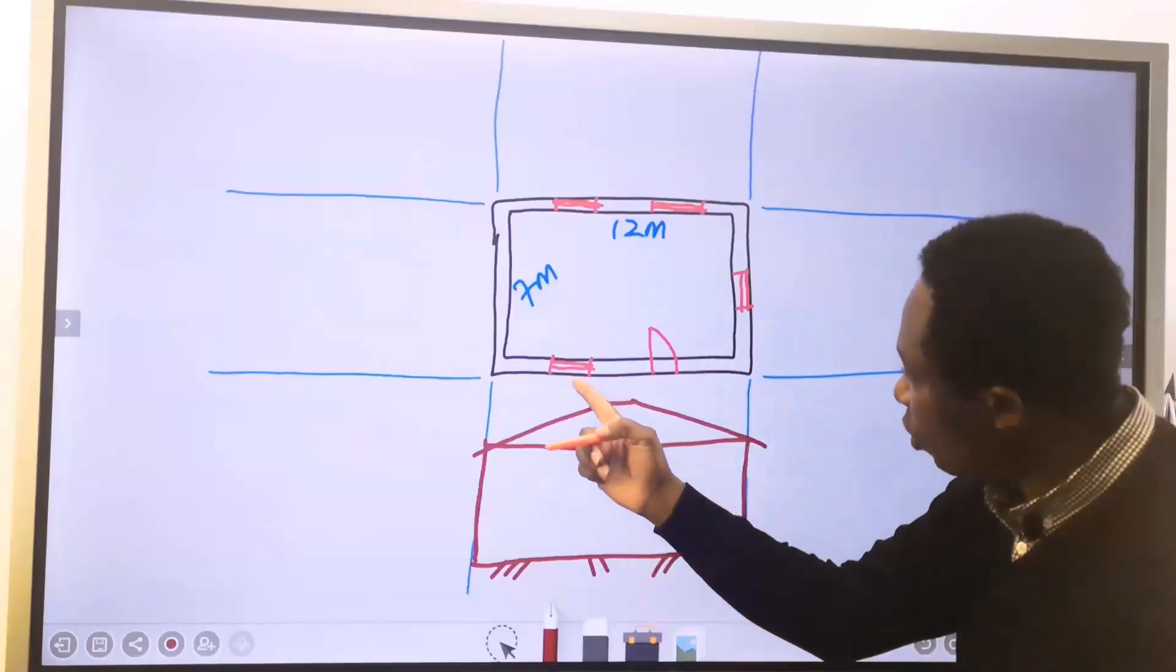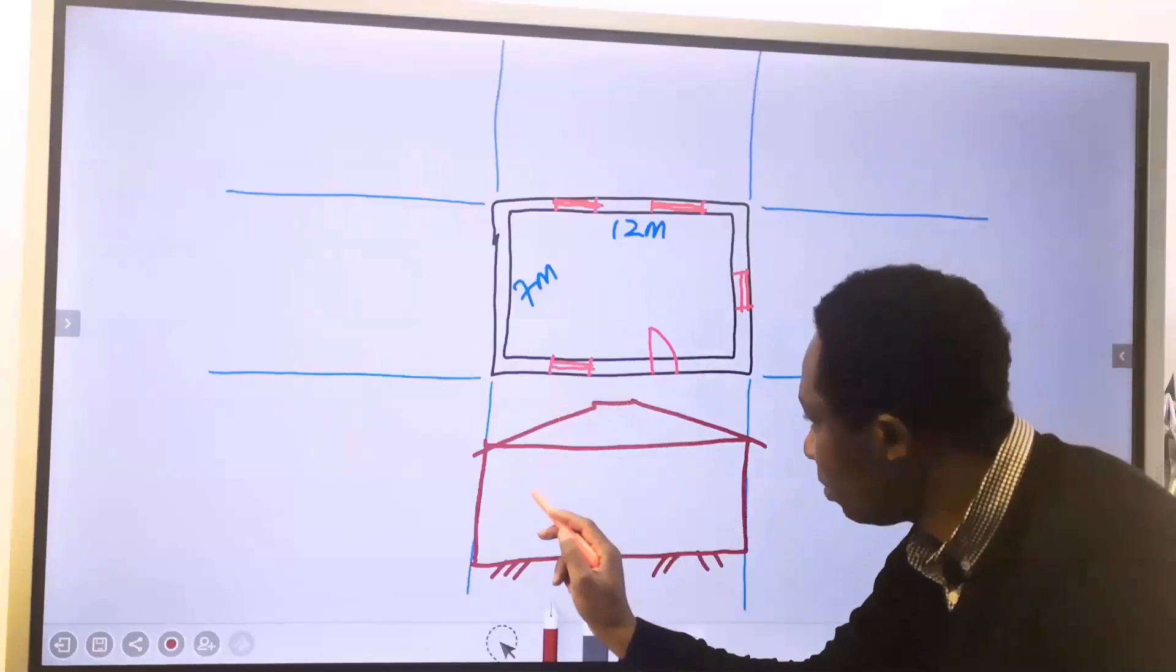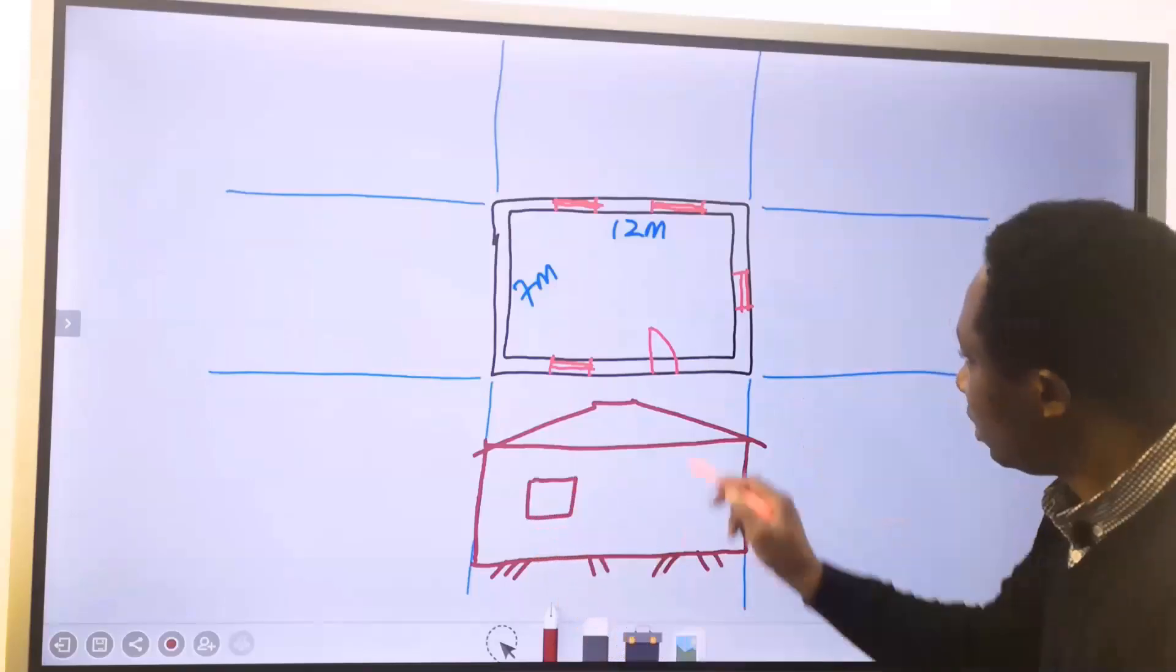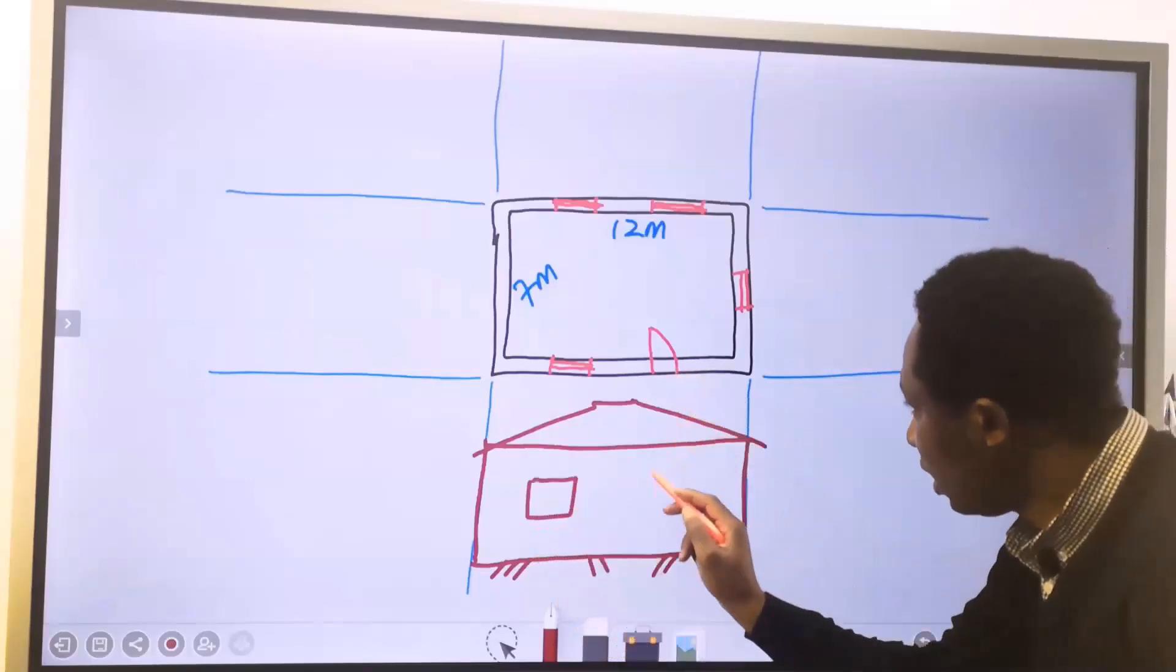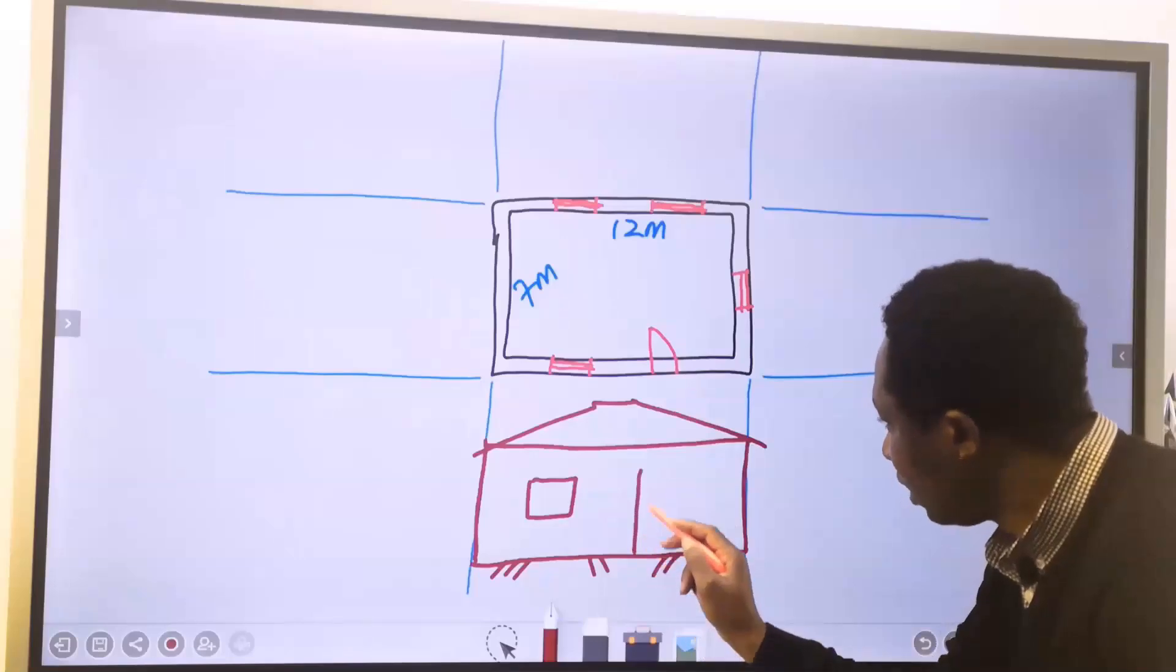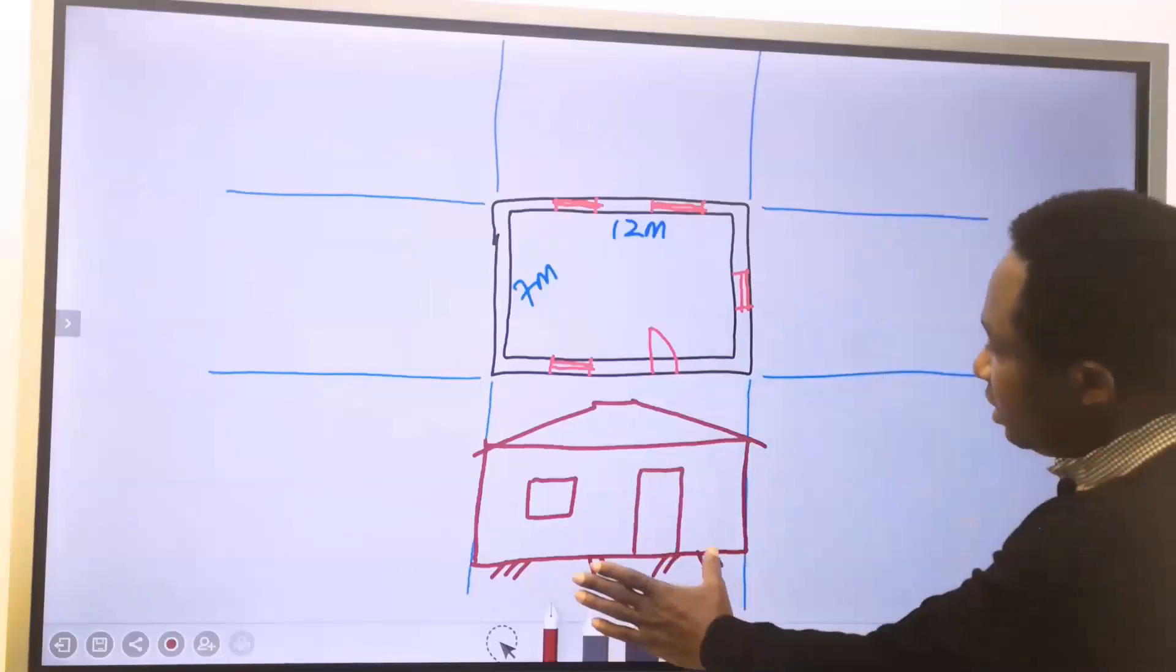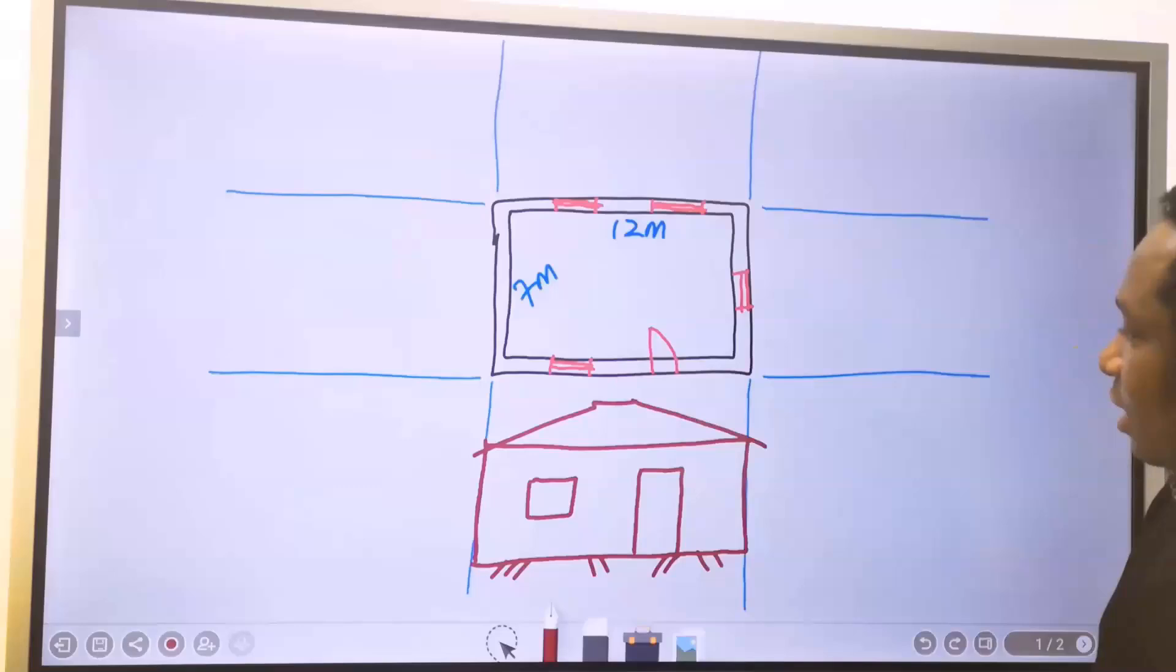This will be just a sketch of the roof. This is a window. Here, I am going to have a window. This is a door. Here, I am going to have a door. This is for the front elevation.